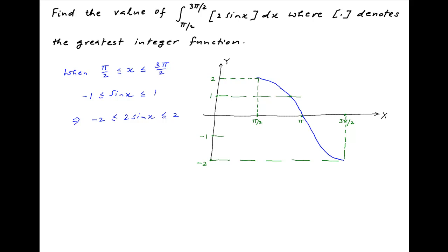Now let's denote by a the point at which the function is equal to 2, by b the point at which the function is equal to minus 2, and by c the point where the function is equal to 0. Let p be the point where the value of the function is equal to 1, and finally let q be the point where the value of the function is equal to minus 1.